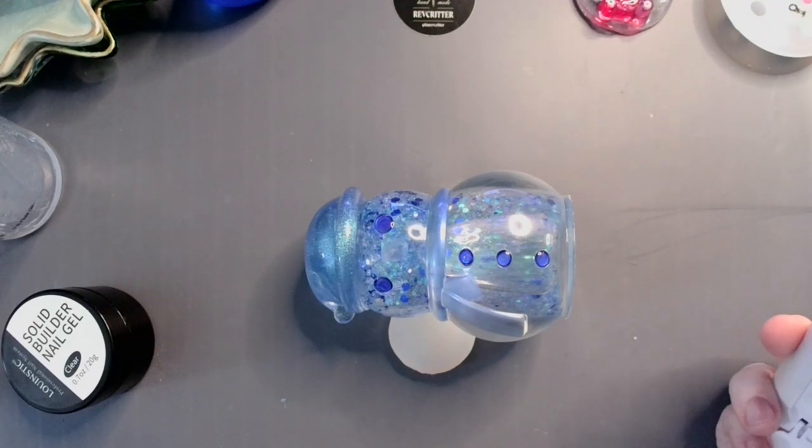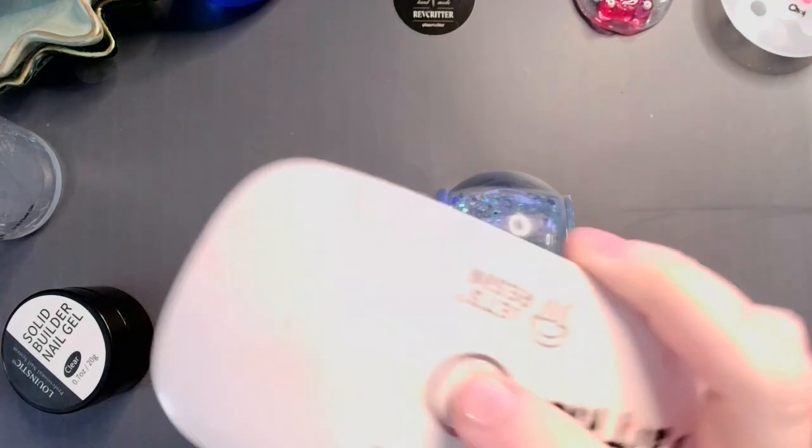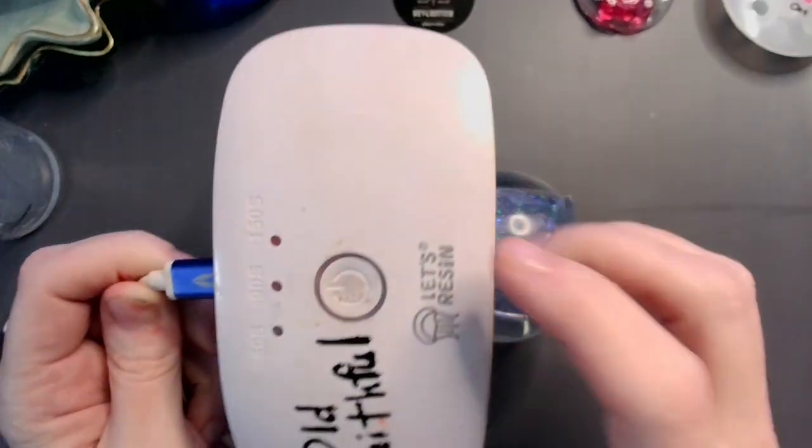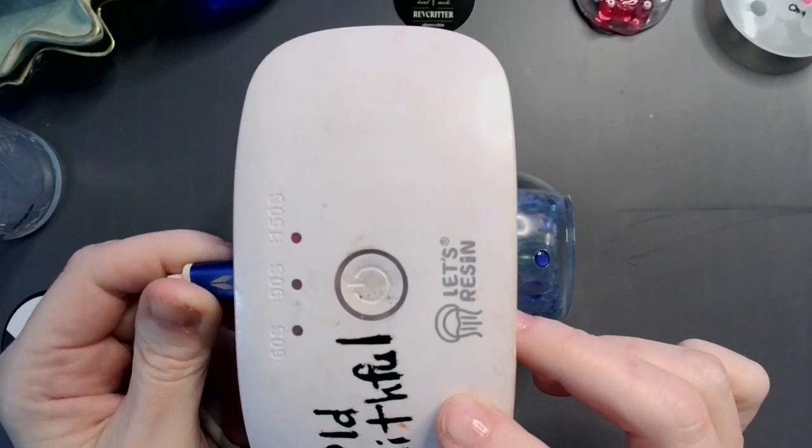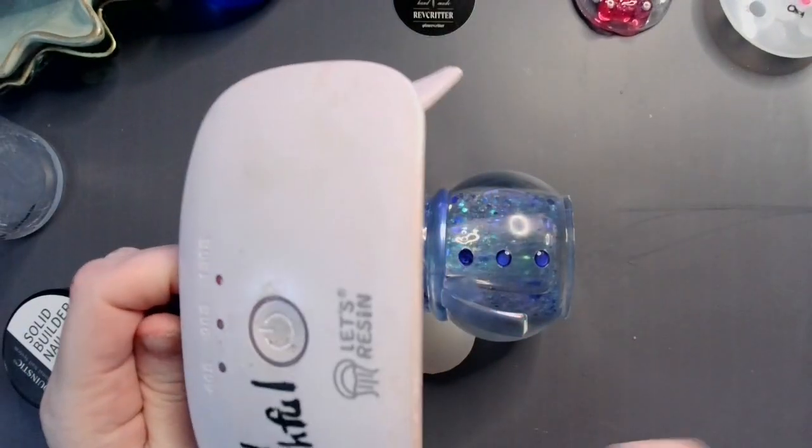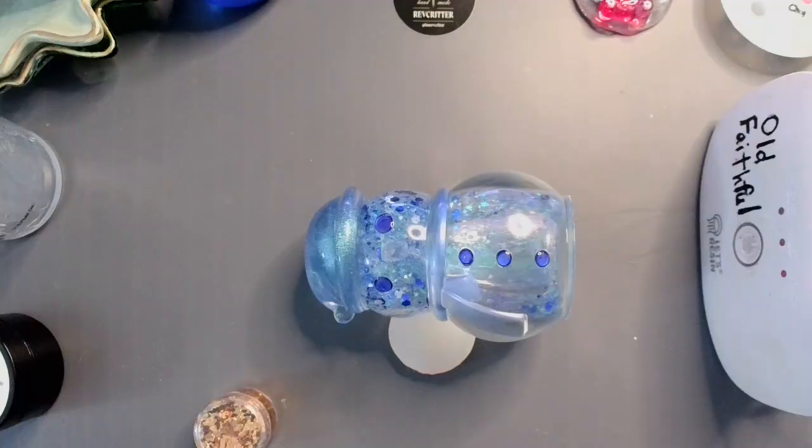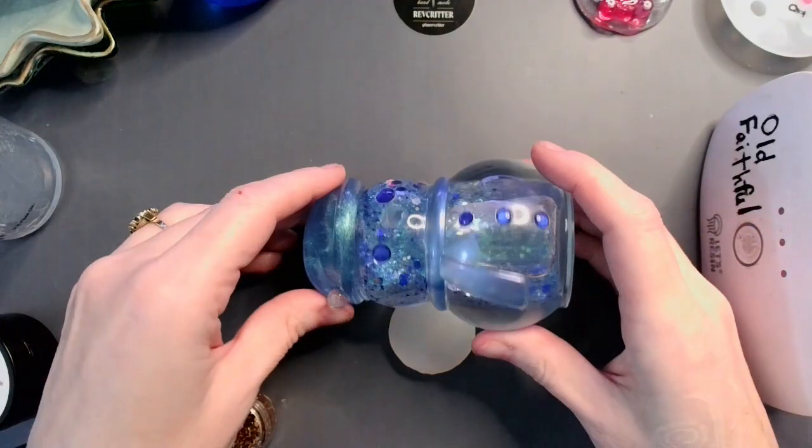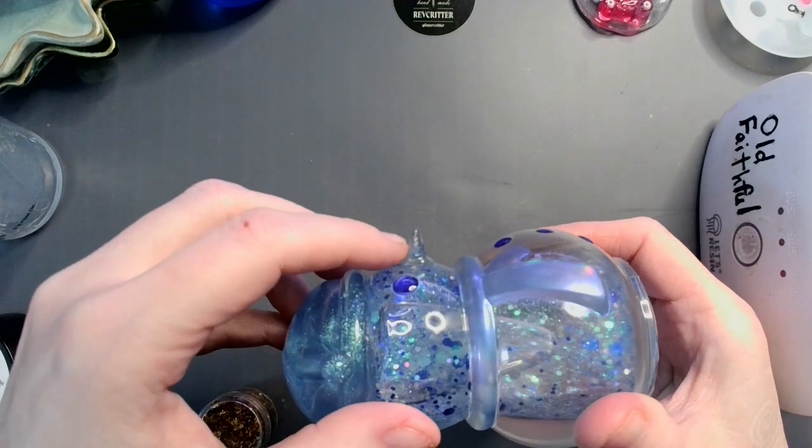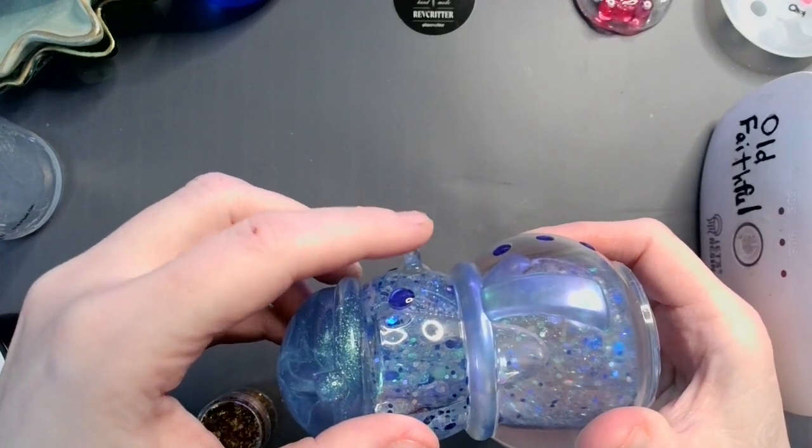And something to hold it still so it doesn't roll over. So I'm just grabbing a little silicone bung. People think it's funny when I call it that, but you know. And then we're going to nuke it for 150 seconds. And I will see you back when it's done. All right. So that's done.